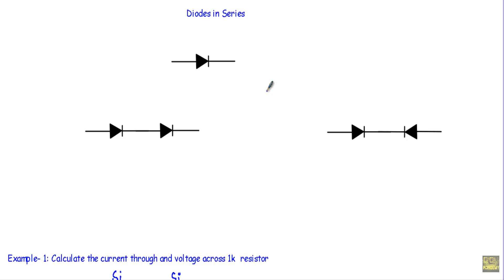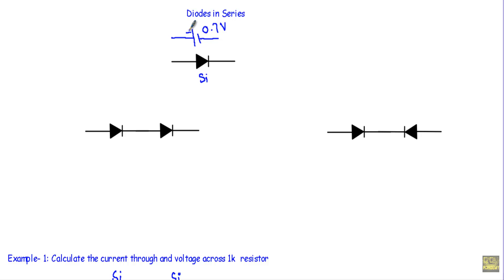In this video I will talk about circuits in which the diode will be connected in series, and I will show you three examples for a better understanding. If I have a PN junction diode made of silicon, when this diode is in forward bias I will replace it with its simplified equivalent circuit — a voltage source of 0.7V whose positive terminal will be on the P side and the negative terminal on the N side.